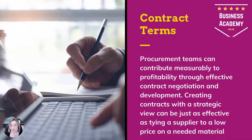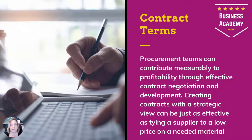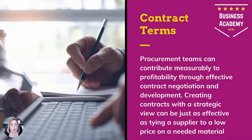We can't forget the hard aspects though. So while we've talked about the soft aspects of relationships, we've also got to talk about contracts and contract management — particularly the contract terms that you put into place in the first place. Procurement teams can contribute measurably to profitability through effective contract negotiation and development. You can argue this as two separate points: negotiation as one point, contract terms as another, or put them together.